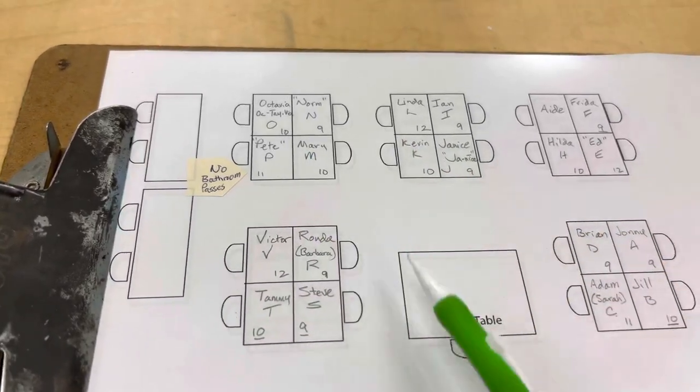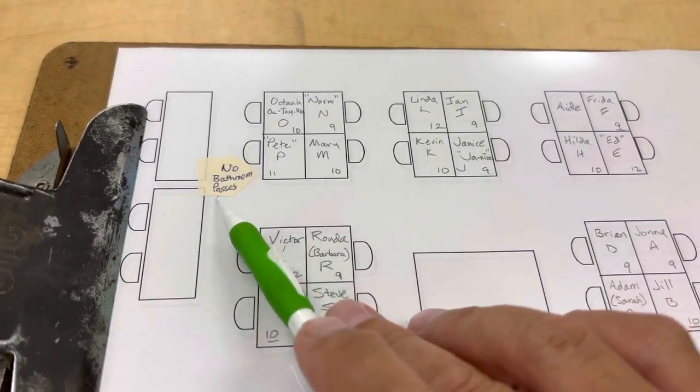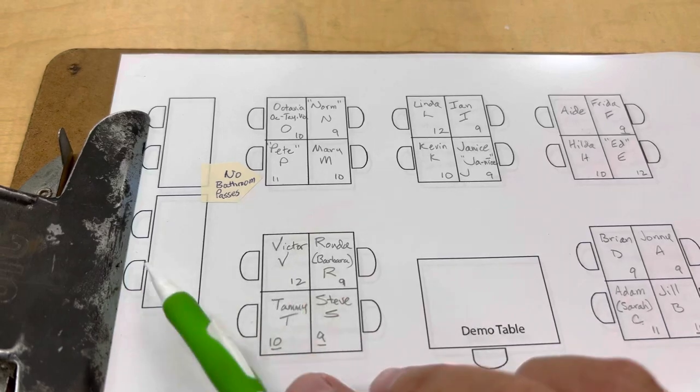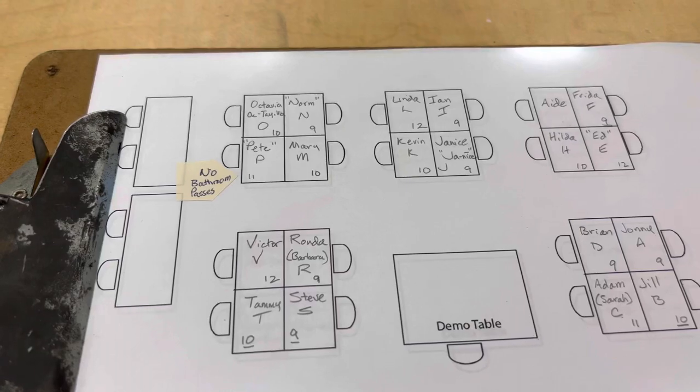Another reason for having a chart is, let's say Peter likes to take advantage of the bathroom. I can put a little sticky note underneath that says 'no bathroom passes' and then remove it after we've shown that we can handle it.